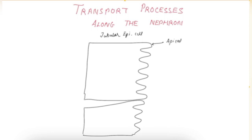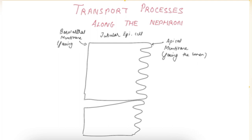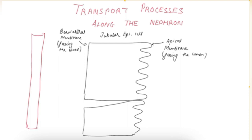This tubular epithelial cell has an apical membrane — the membrane facing the lumen of the tubule of the nephron — and a basolateral membrane, which is facing the blood, meaning peritubular capillary blood which emerges from the efferent arteriole.